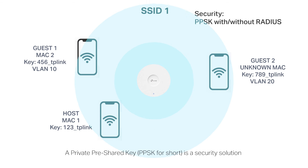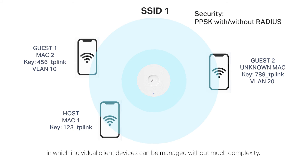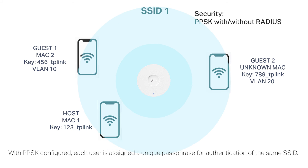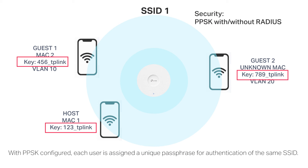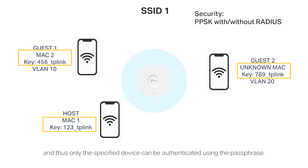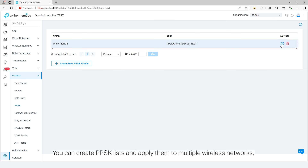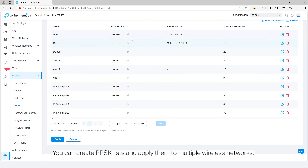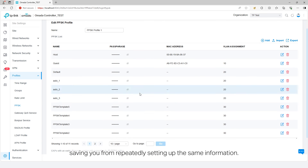A private pre-shared key, PPSK for short, is a security solution in which individual client devices can be managed without complexity. With PPSK configured, each user is assigned a unique passphrase for authentication of the same SSID. It also allows a binding of a passphrase to device MAC addresses, so only the specified device can be authenticated using the passphrase. You can create PPSK lists and apply them to multiple wireless networks, saving you from repeatedly setting up the same information.